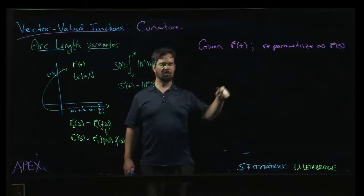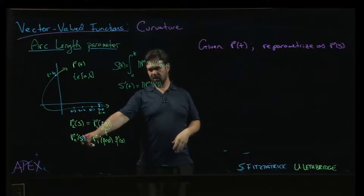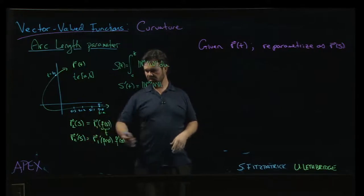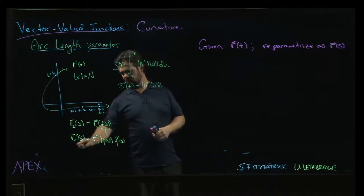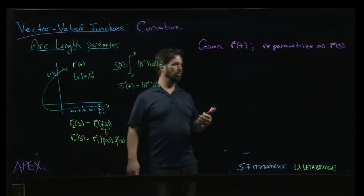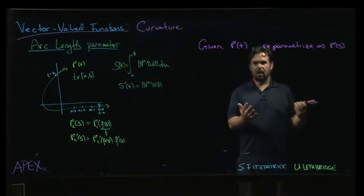And so I think when you reparametrize, you really should give them different names, like R1 and R2, because they're different functions. In the previous example, we started with like 3t minus 1 or something like that.